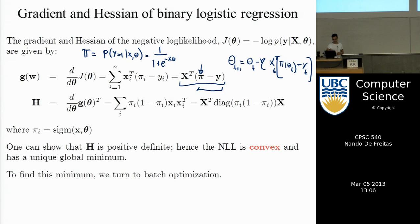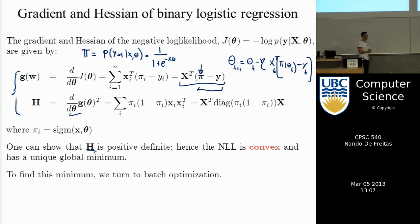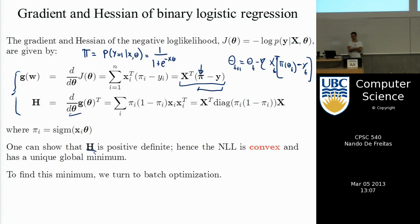We can take the second derivative to get the Hessian. Your homework is to derive both the gradient and the Hessian expressions. You'll also look at properties of H — one property is that it's positive definite. A positive definite second derivative means we have a convex function with a single minimum — which is very powerful because it guarantees the learning algorithm will find that minimum.